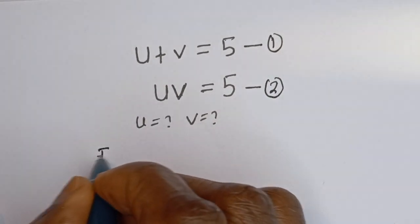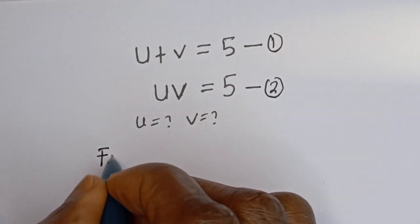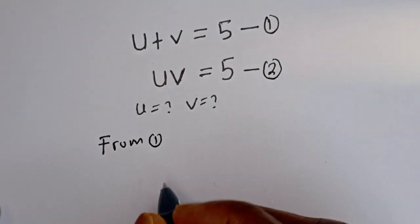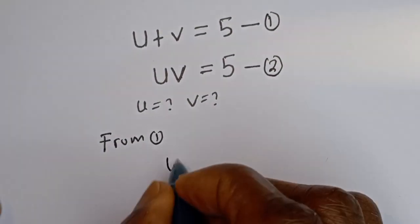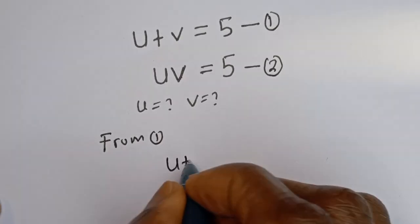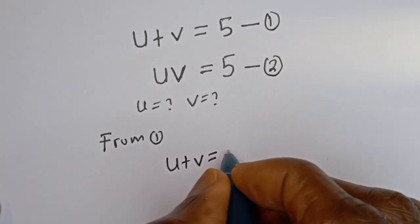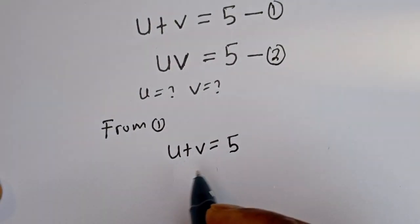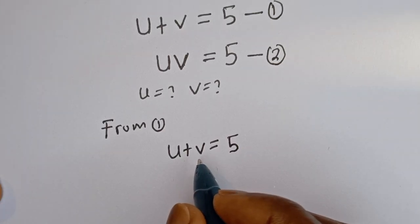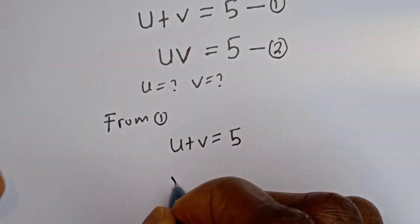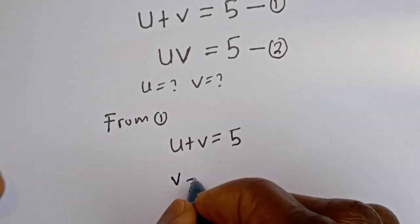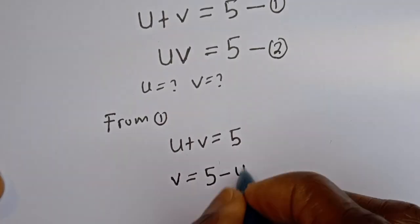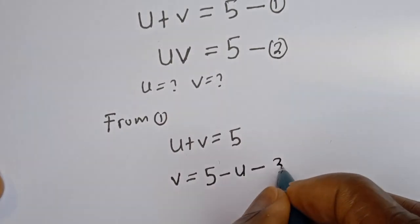From equation 1, that is u plus v equal to 5, let's make v the subject of the formula. v is equal to 5 minus u — let's call this equation 3.